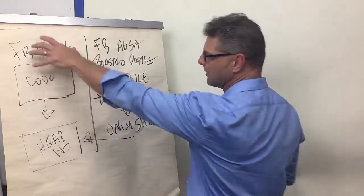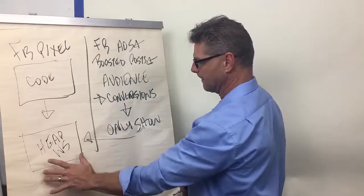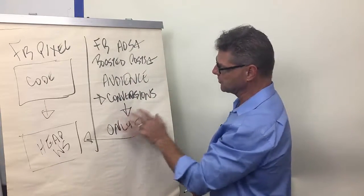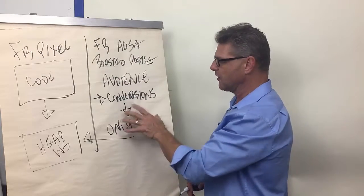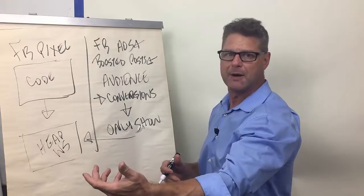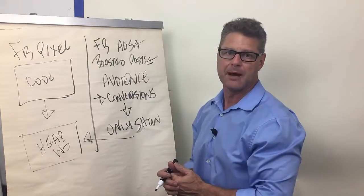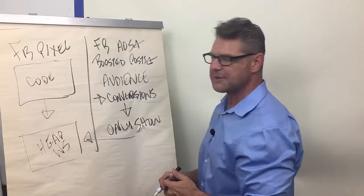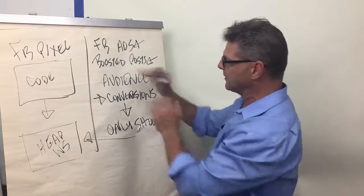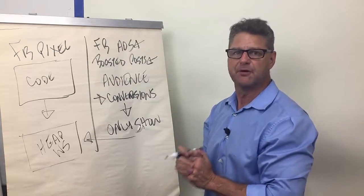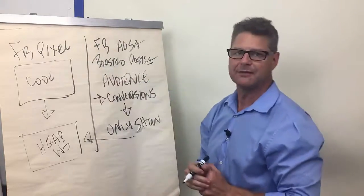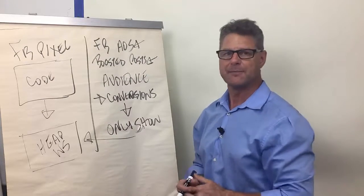So now once this is on your website and you start creating ads and you start boosting posts and you choose that conversion, you've got a directed audience of people who are already on your website and saw what you're all about. Maybe they came to the website and it wasn't the right time for them to buy. But now every single time they go to their Facebook feed, your ad's going to pop up in their feed because it's tracking the pixel that was on your website.